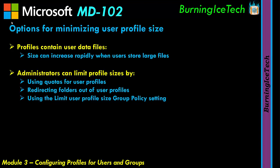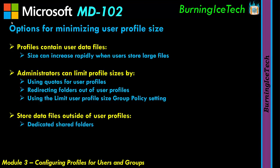There are over 3,000 group policy settings, and there is a 'Limit User Profile Size' setting you can configure. You can also store data files outside of user profiles using dedicated shared folders — even online options like OneDrive — and you can make use of home folders as well.